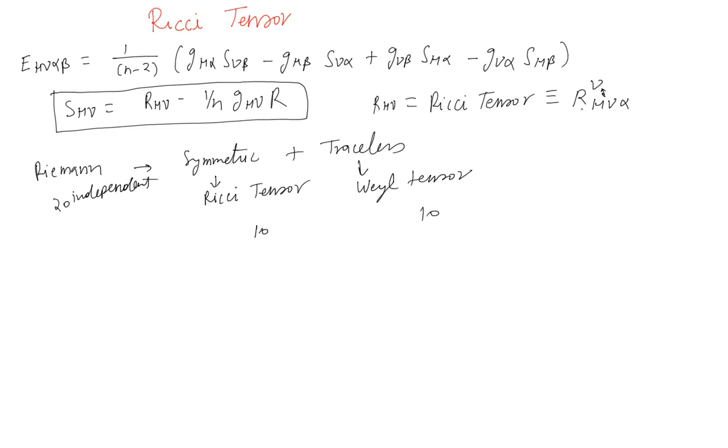Now it's a tensor so it does have a physical interpretation because usually tensors and vectors have some physical meaning associated. Just to begin with, in three dimensions both Riemann tensor and Ricci tensor have six components while Weyl tensor actually vanishes. So in three dimensions Ricci tensor is equivalent to Riemann tensor.